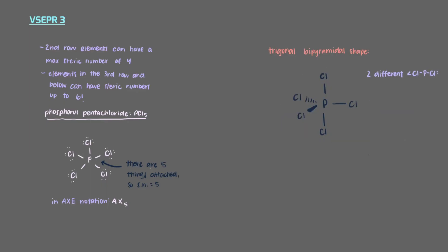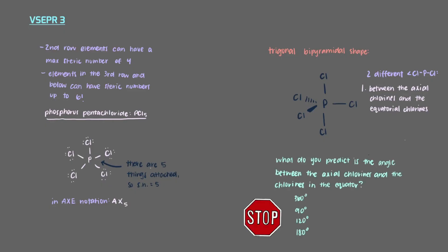There are two different chlorine-phosphorus-chlorine bond angles in this molecule. One is between the axial chlorines and the chlorines around the equator. What do you predict is the angle between the axial chlorines and the chlorines in the equator? There is a 90 degree angle between the axial chlorines and the plane made by the equator and the chlorines in that plane.